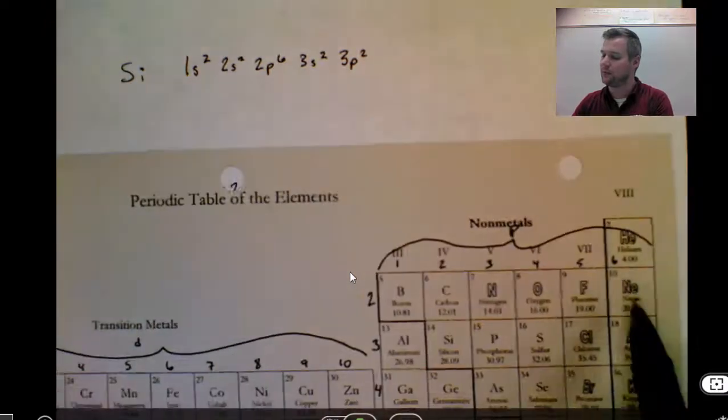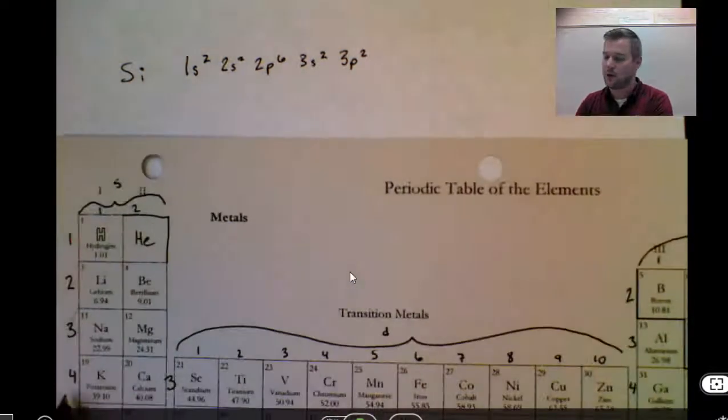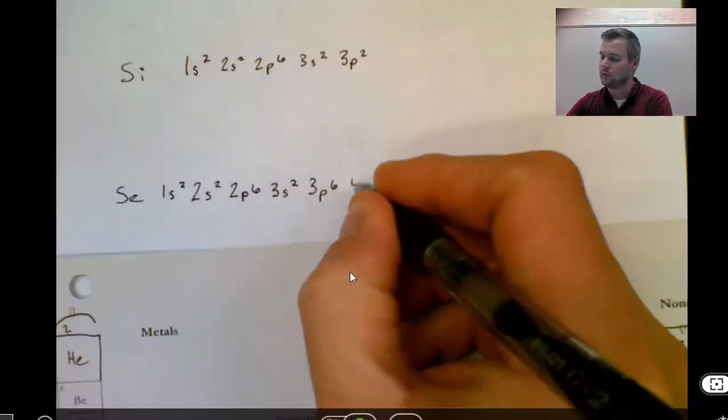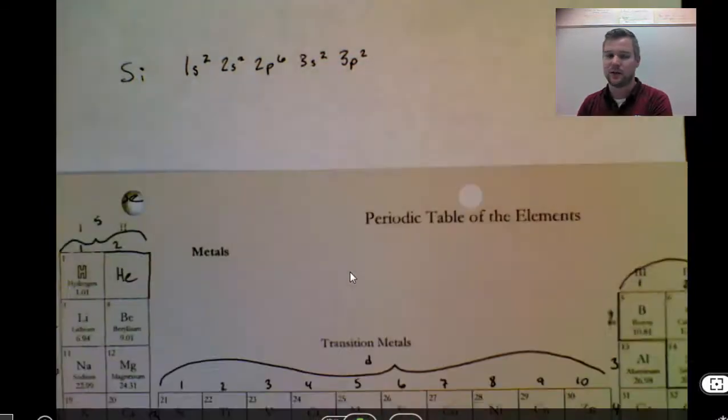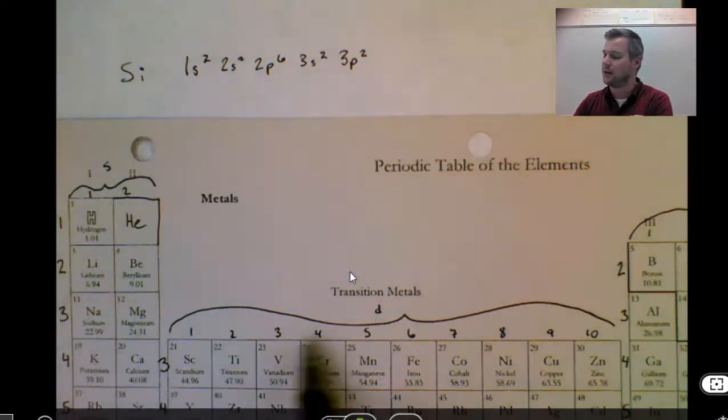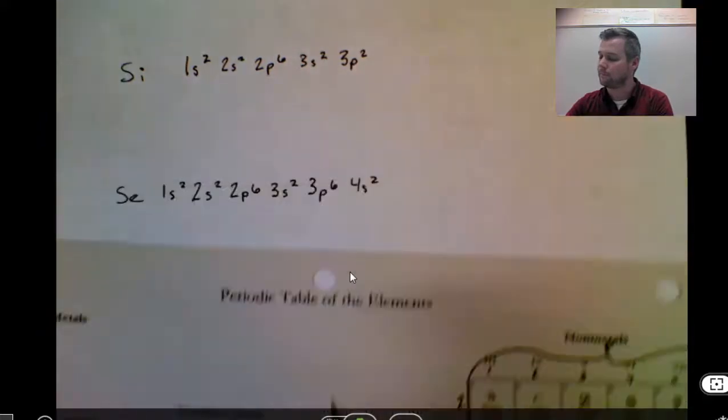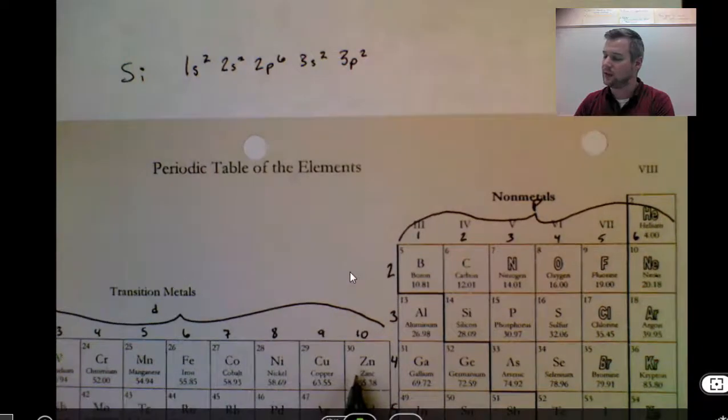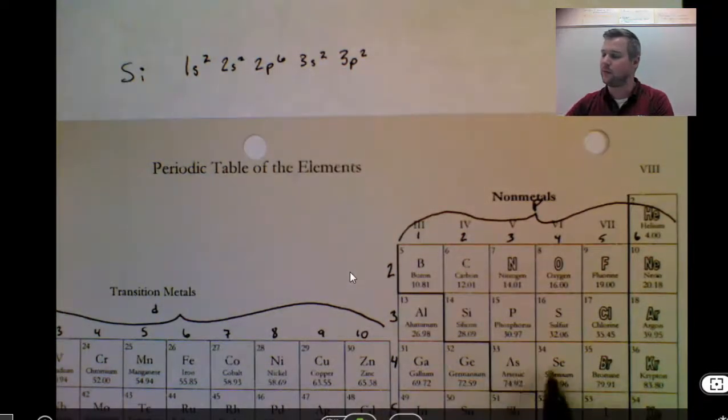From magnesium, I can go further right. Go straight across. 3P6 gives me argon. In argon square, I can't go any further right, so back into the left. 4s, 1 and 2. If I go further right to calcium, I'm bumping into scandium, and scandium says 3, so I have to say 3 again. 3D, 1 through 10. That's zinc square. And then finally, to get to selenium, 4P1, 2, 3, 4. 4P4.